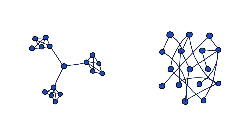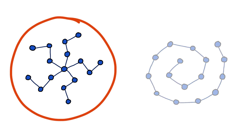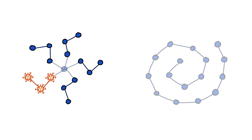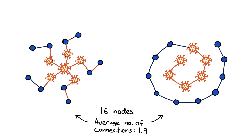Modeling clusters helps us predict which nodes to target for the best chance of prevention. This brings us to our next property: centrality — how centralized is the network? Both of these networks have 16 nodes and an average of 1.9 connections per node, but they're very different. The first is much more centralized, meaning the center node is extremely influential. If that node gets infected, it's basically game over for the whole network. A policy that would help is something that removes the central node, like a popular person self-isolating or a gym closing down.